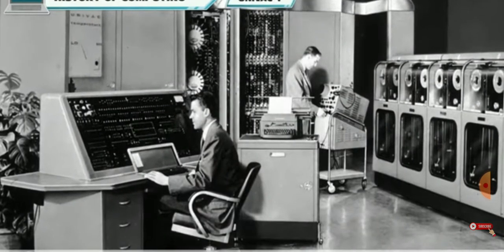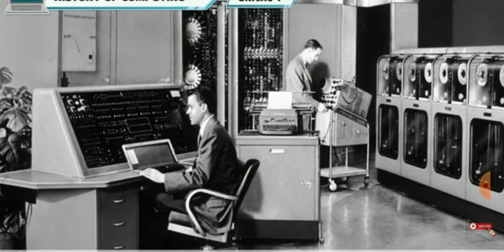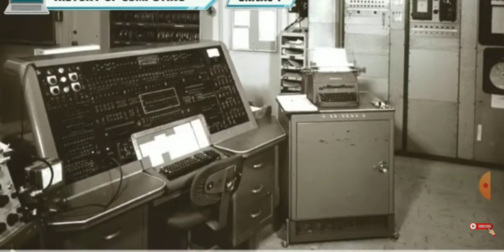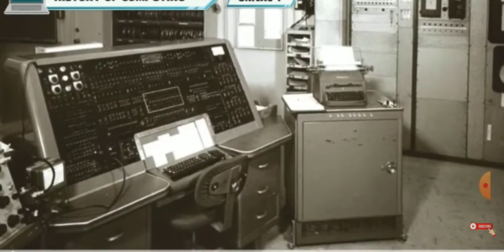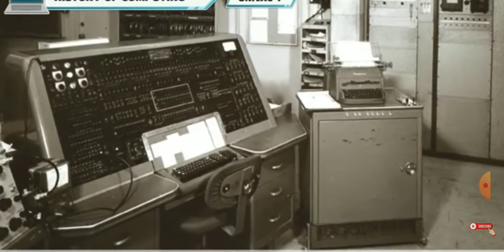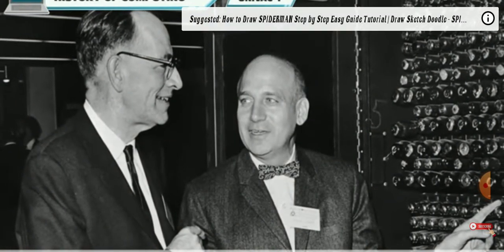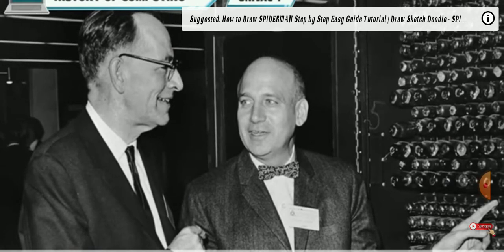Now computers were ready to be sold in the market. For this, UNIVAC I was developed. UNIVAC stands for Universal Automatic Computer. It was the first commercial computer produced in the United States. It was designed by J. Presper Eckert and John Mauchly, the inventors of the ENIAC.